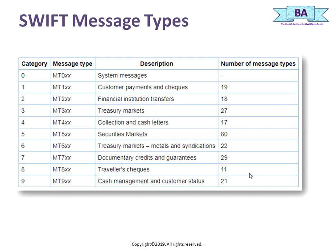Each SWIFT message is represented by a three-digit number. There are different categories with message type descriptions and number of message types. Different message types have different descriptions. For a bank that is into payments, they specifically deal with the MT 100 and 200 series, and the 900 series. For treasury and markets, you have the 600 series, and for securities you have the 500 series.